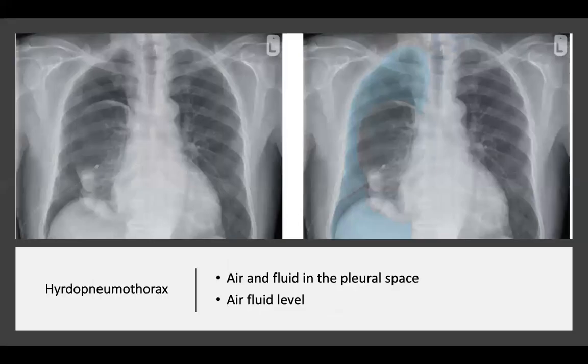That was an example of hydropneumothorax — air and fluid in the pleural space. An erect chest x-ray will show an air-fluid level, with the horizontal fluid level usually well defined and extending across the whole length of the hemithorax. Causes may be iatrogenic (such as introduction of air during pleural fluid aspiration or chest drain insertion), trauma, or the presence of a gas-forming organism. The images show a right-sided hydropneumothorax with the pneumothorax marked in blue, the pleural fluid in green, and the air-fluid level shown by a black dotted line.